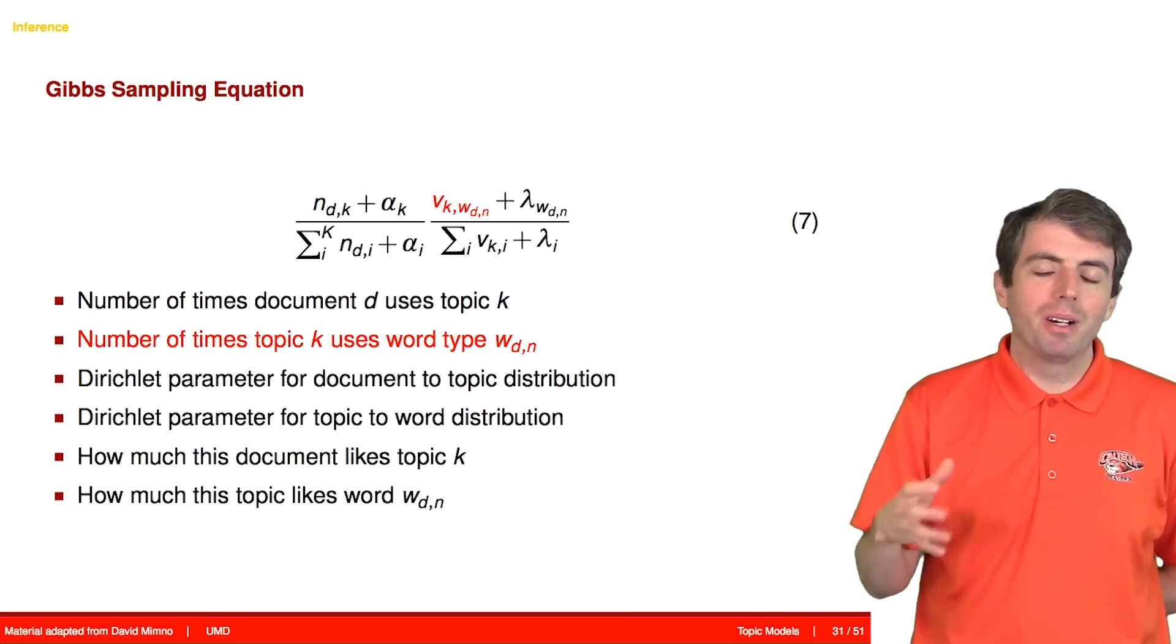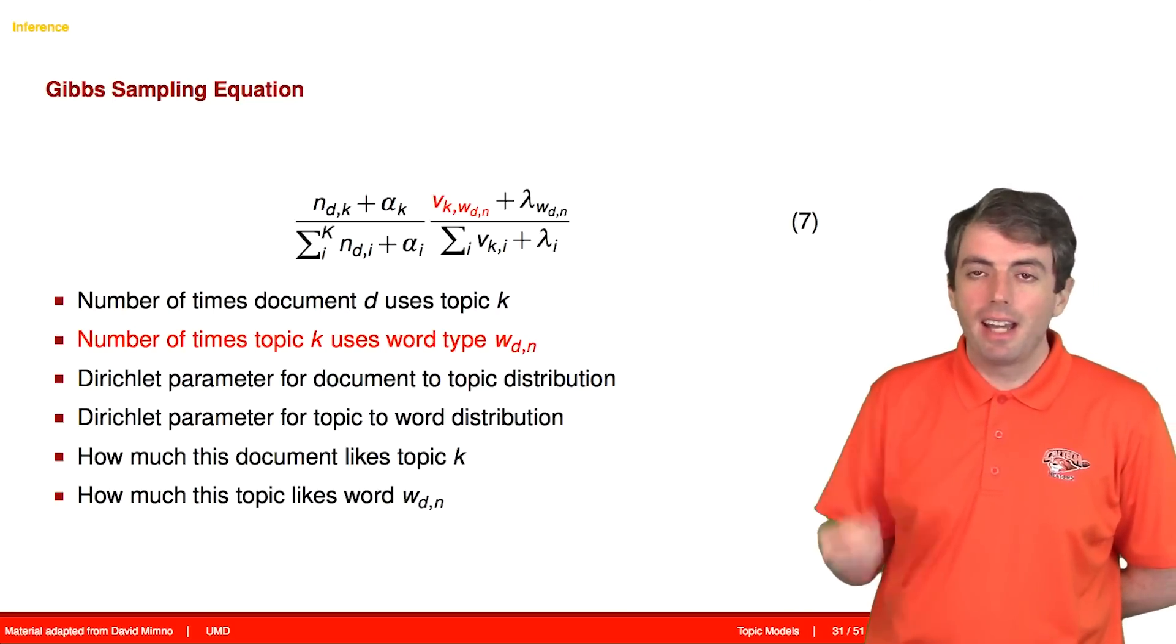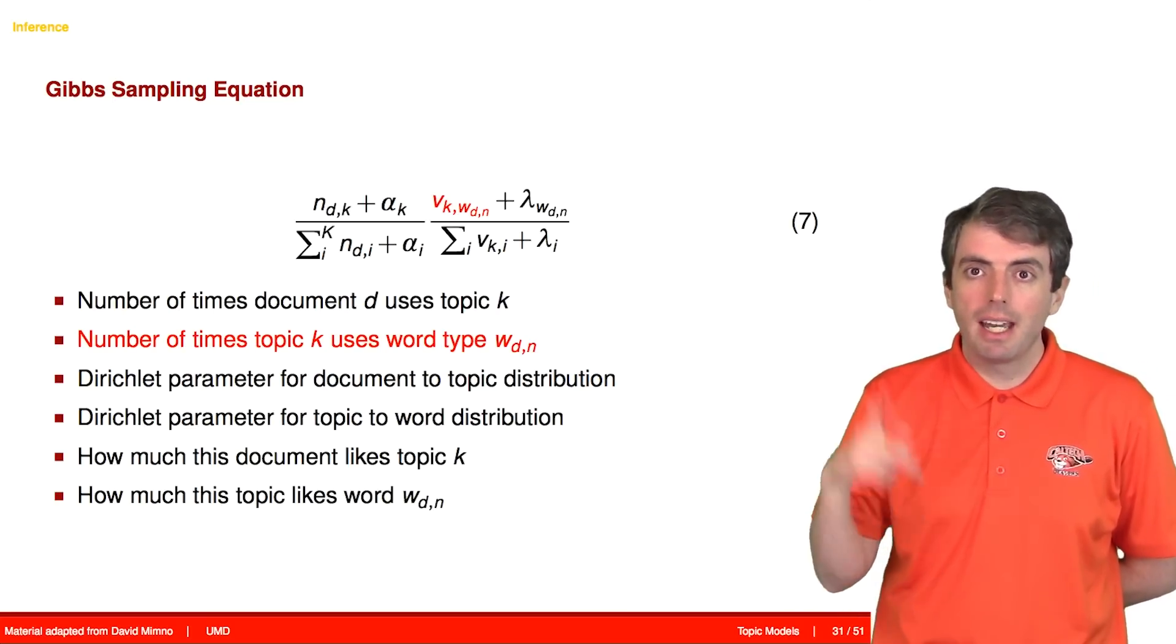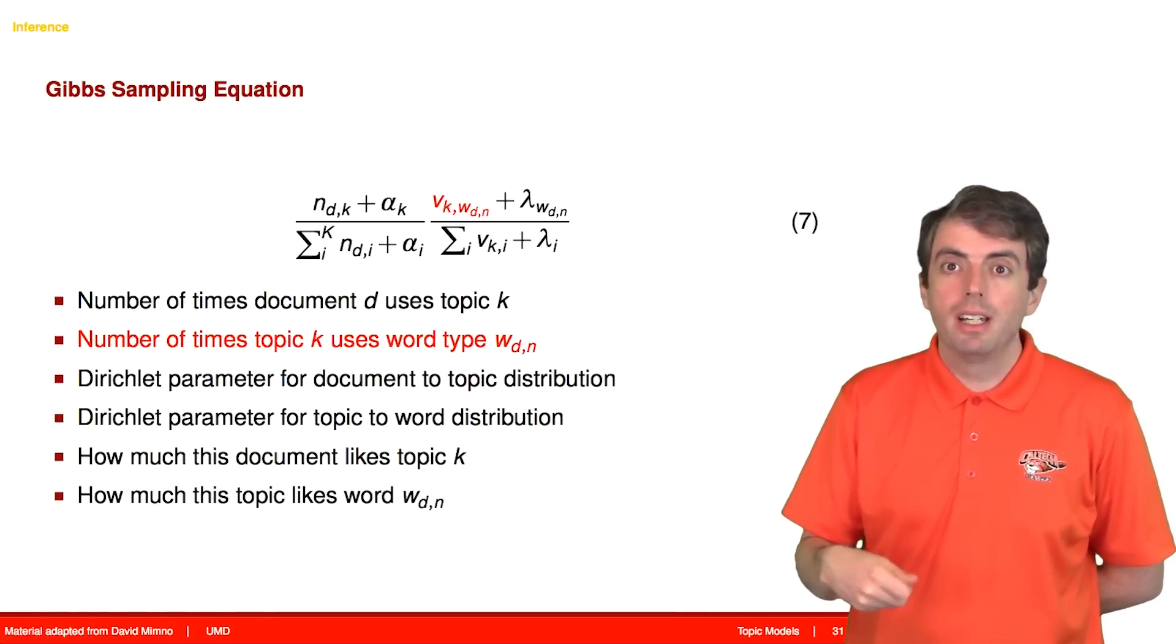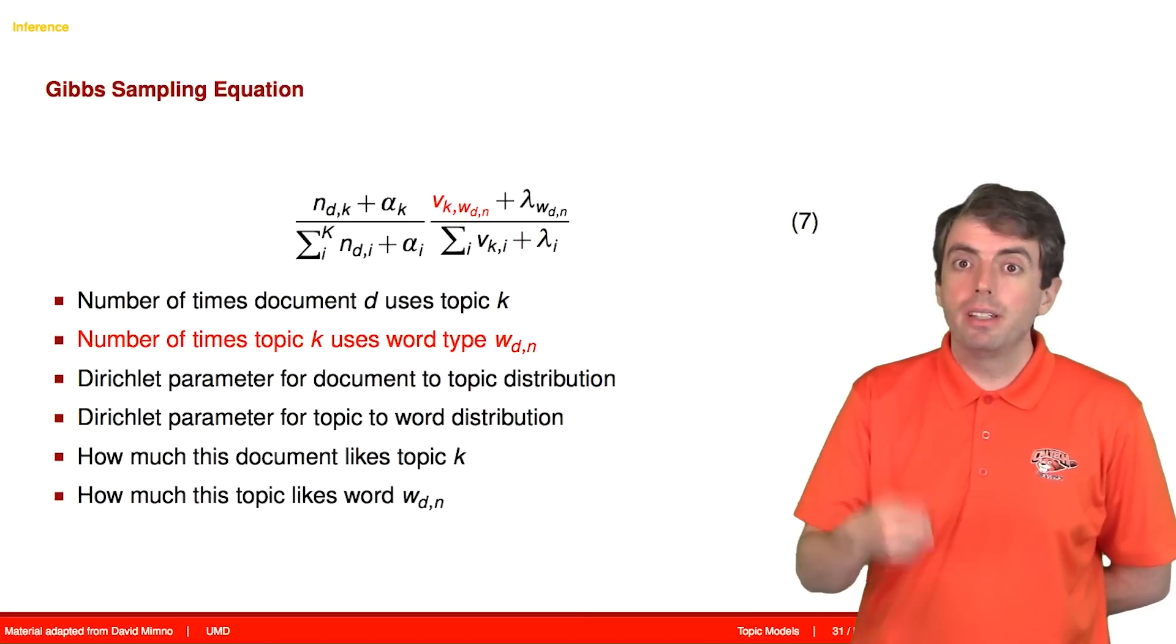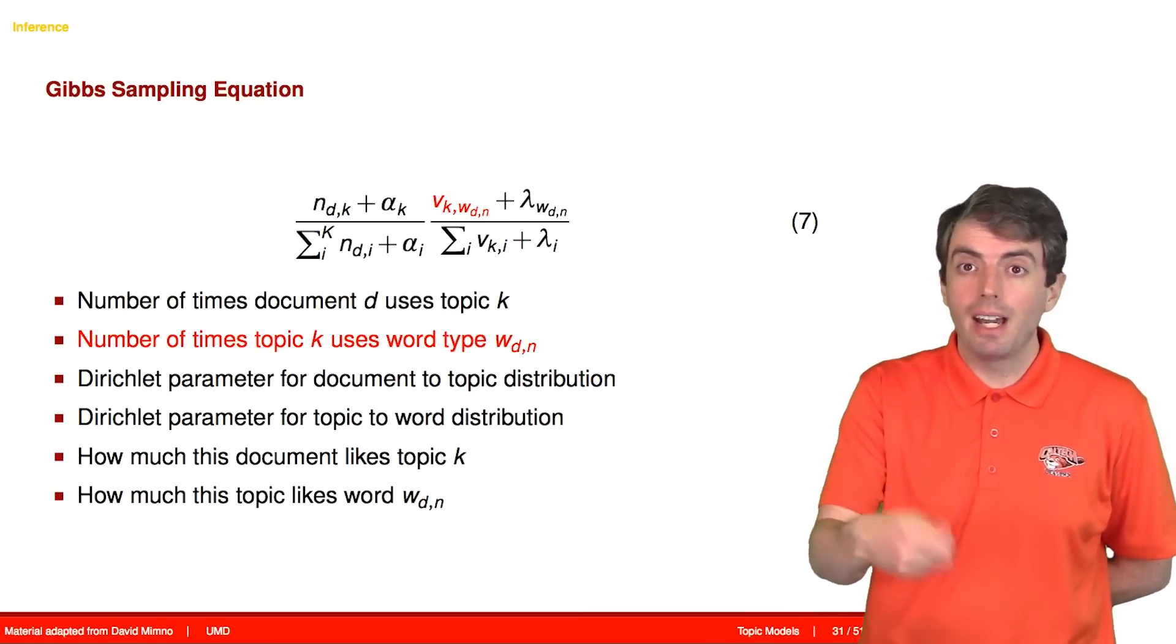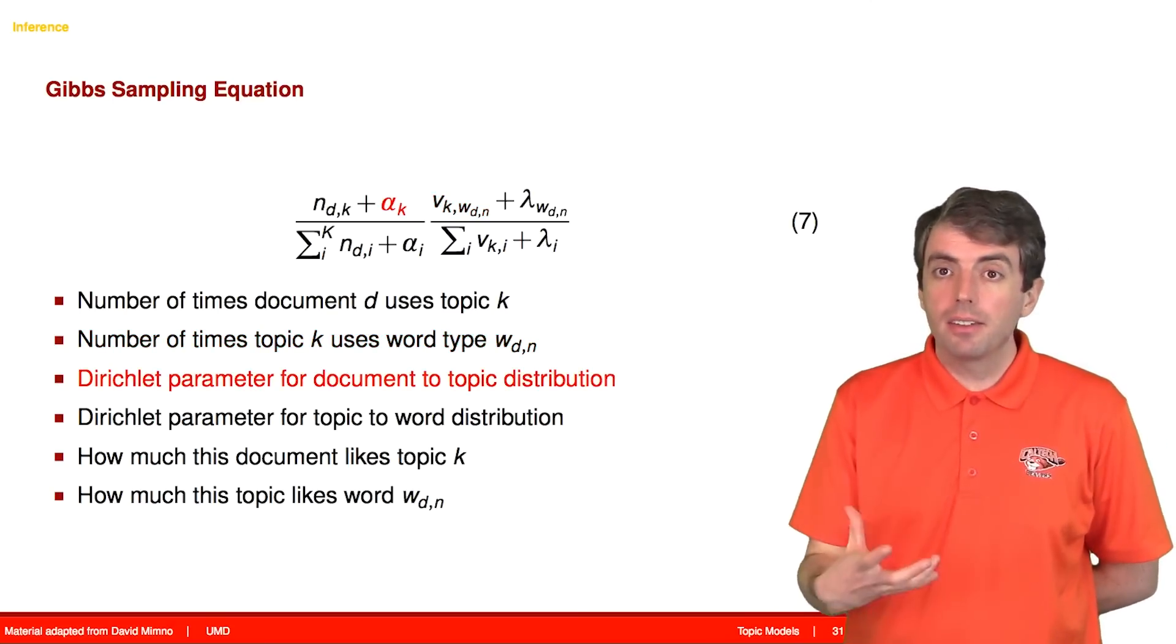The second most important part of this expression is how many times the topic has used this word already. So if a topic has already used the word record before, it's going to more likely use that word again.